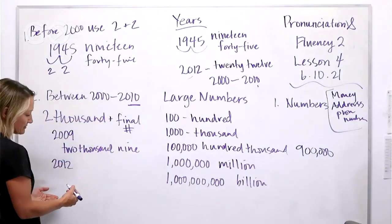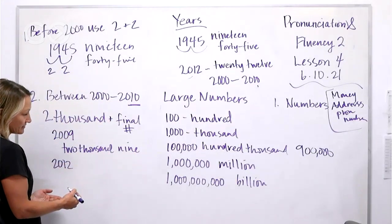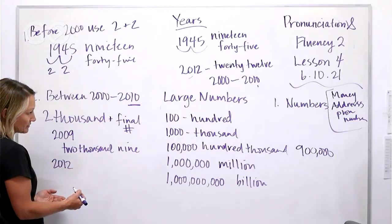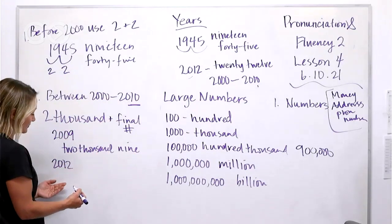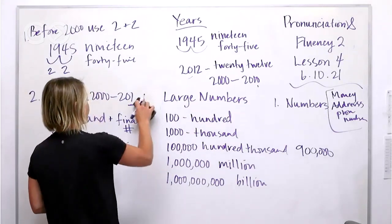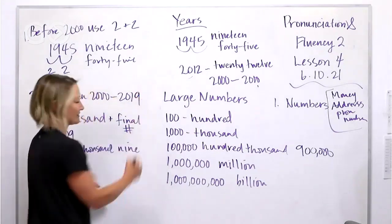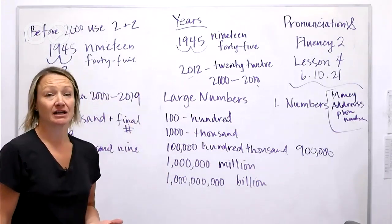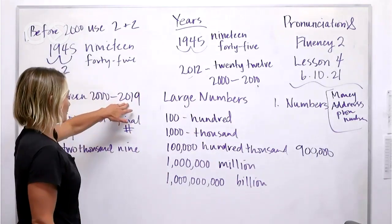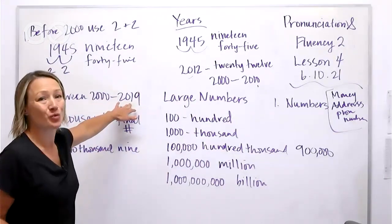Actually, let's say this range goes up to 2019. So you can say '2019' as either 'two thousand and nineteen' or 'twenty nineteen' — both are acceptable.